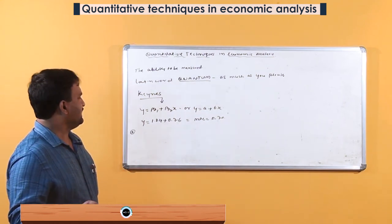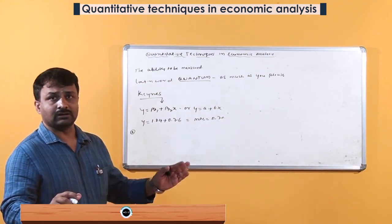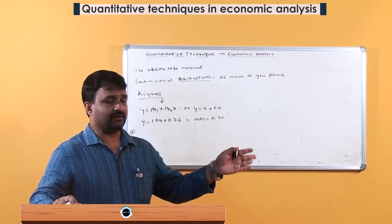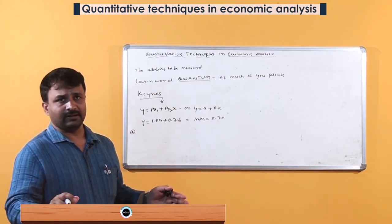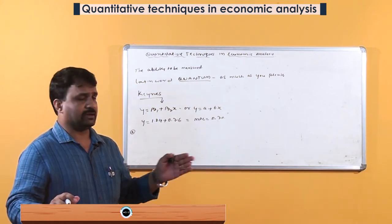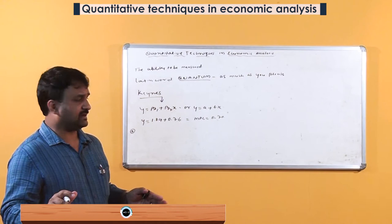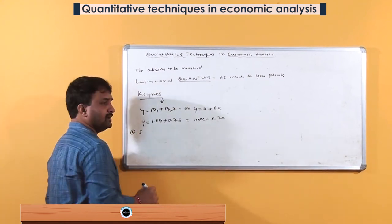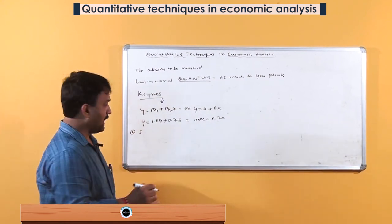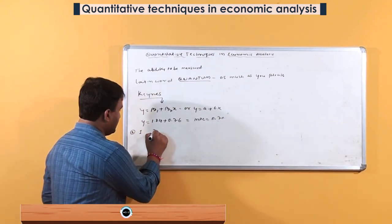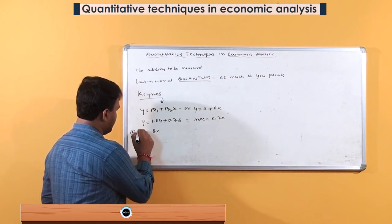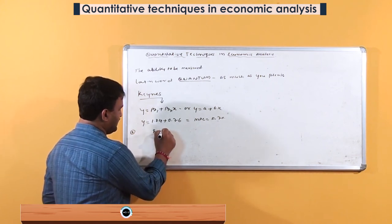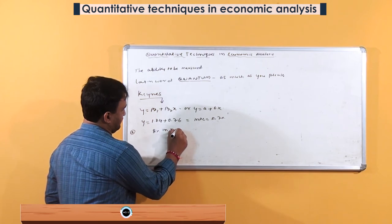For example, 'Indian economy will grow at a huge level next year' is qualitative. We can state it quantitatively as 'Indian economy is expected to grow at 8 percent next year.'